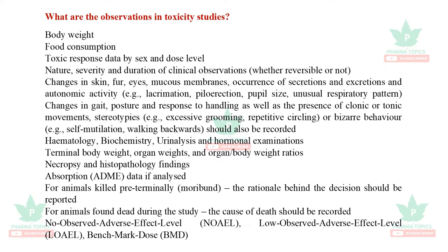Observations in toxicity studies include body weight, food consumption, toxic response data by gender, nature, severity and duration of clinical observations, changes in the skin, fur, mucous membrane, autonomic activity, changes in gait, posture, response to handling, as well as presence of clonic or tonic movements. They usually observe three things: no observed adverse effect level (NOAEL), low observed adverse effect level (LOAEL), and benchmark dose in the acute toxicity studies.